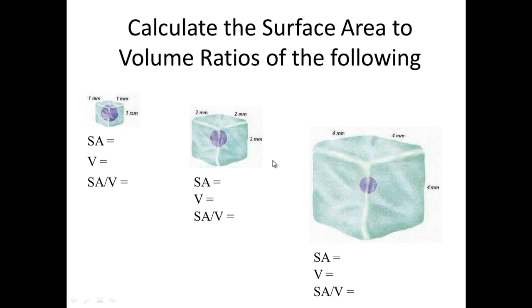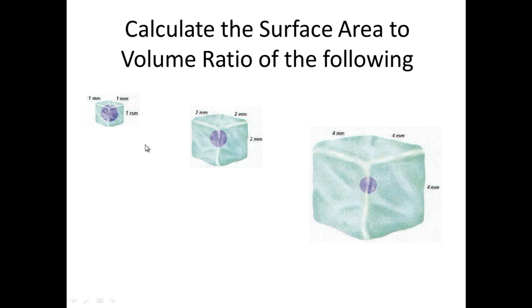So what we're going to try and do now is work out the surface area to volume ratio of these three following cubes. Now you should be able to work out the surface area and also the volume as well. So when we have a look at it, the surface area of this small cube is 6mm squared, the medium one is 24mm and obviously the larger square is 96mm.